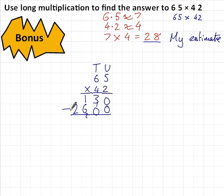New line, add a 0. 5 times 4 is 20. 6 times 4 is 24 plus the 2 plus the 2 that I'm carrying, 26. Okay, add the numbers together. 0 and 0 is 0. 3 plus 0 is 3. 1 plus 6 is 7. 2 plus nothing is 2. 2730.